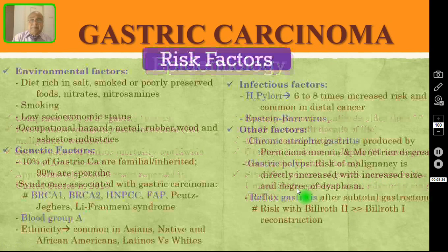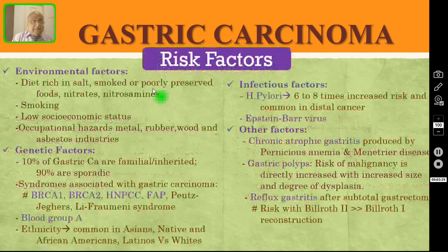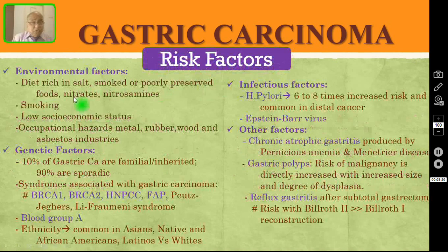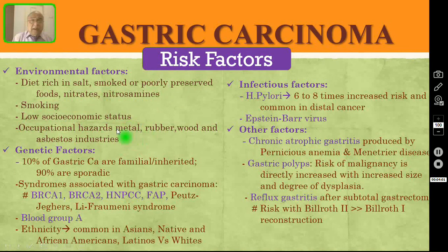Coming to the risk factors. Number one is environmental factors: diet rich in salt, smoked diet or poorly preserved foods, nitrates and nitrosamines, smoking, low socioeconomic status, and occupational hazards — those working in metal, rubber, wood and asbestos industries are more prone to develop gastric carcinoma.